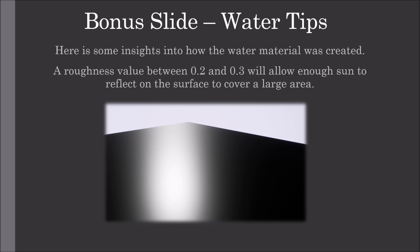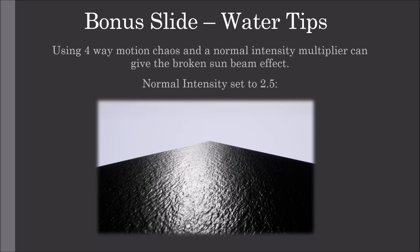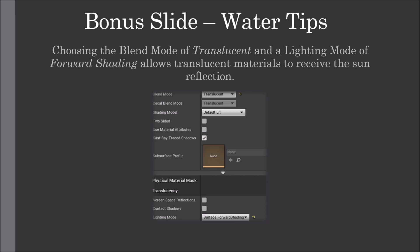A roughness value between 0.2 and 0.3 will allow enough sun to reflect on the surface to cover a large area. Using a 4-way motion chaos and a normal intensity multiplier can give the broken sunbeam effect. Here's a breakdown of how the normal intensity material function is made, and here's what the material looks like when the normal intensity is set to 2.5. Choosing the blend mode of translucent and a lighting mode of forward shading allows translucent materials to receive the sun reflection.